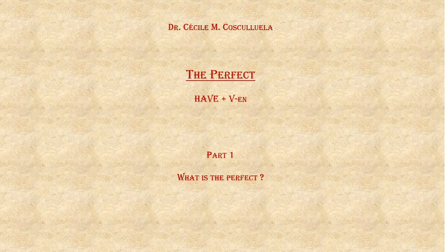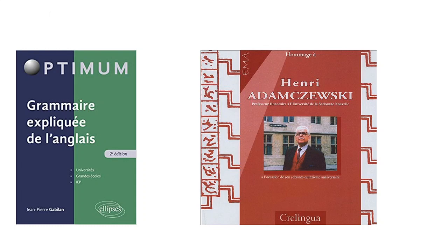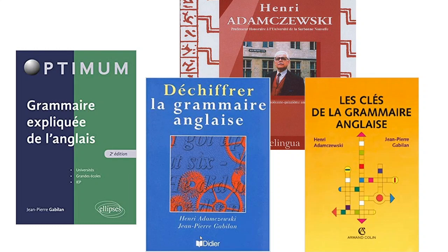Before we go on to the first part of this presentation, which will answer the question 'What is the perfect?', I would first like to point out that the work we're doing is based on the theoretical approach by Henry Adamczewski, which has been developed in La grammaire expliquée de l'anglais, written by Jean-Pierre Gabilan, who used to be a student of Henry Adamczewski at the University of La Sorbonne Nouvelle in Paris. Together they co-wrote a number of books, namely Déchiffrer la grammaire anglaise and Les clés de la grammaire anglaise. This is the general framework within which we're working.